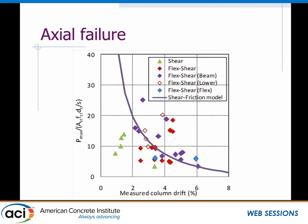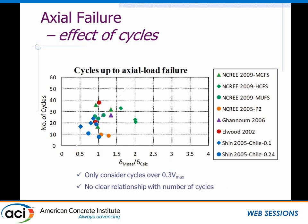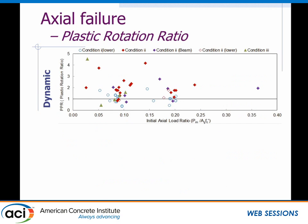Comparing that axial failure drift to the shear friction model: without the trend curve, there's no visible trend, but it seems acceptable for flexure-shear cases — though not okay for pure shear failure cases. The shear friction model was never developed for flexure-shear failures, so that's not a surprise. We need to pay attention to pure shear failure cases in terms of drift at axial failure. Looking at the effect of cycles, again it's difficult to see a trend, and further study with this data set will be needed.